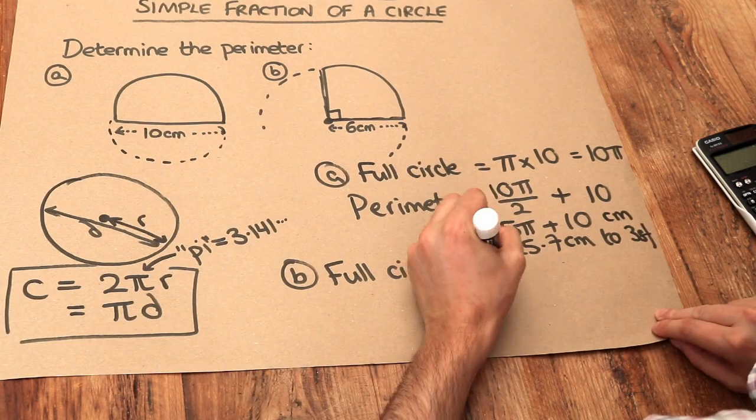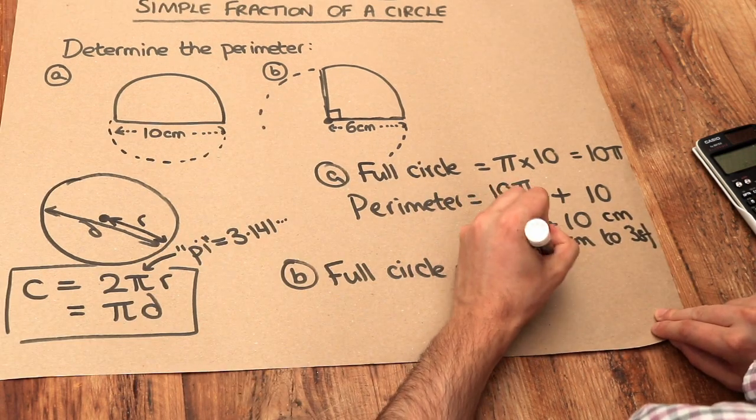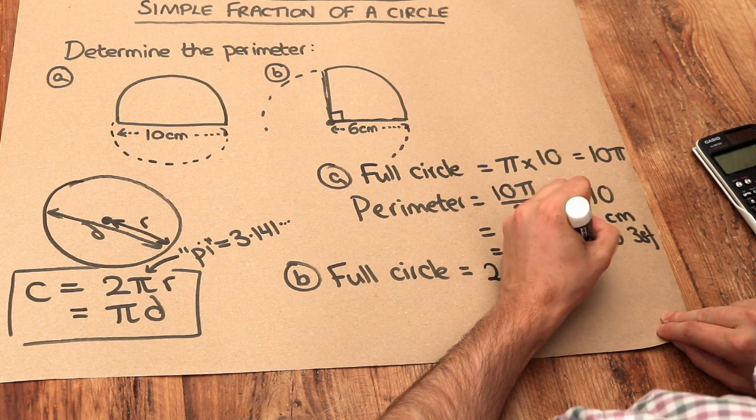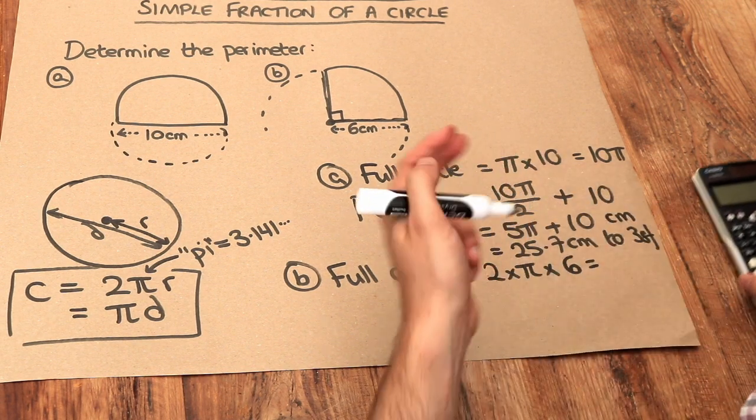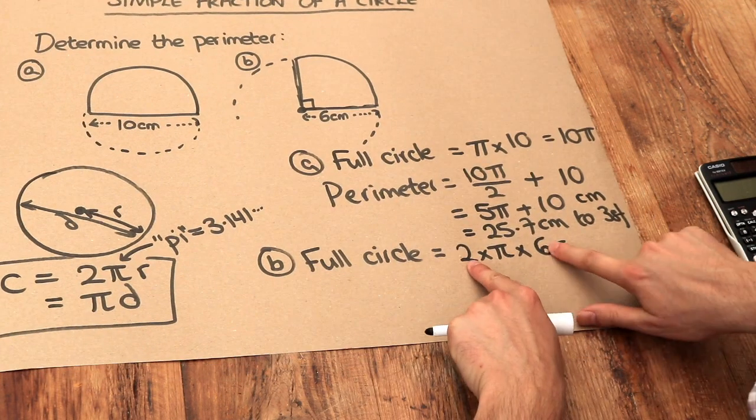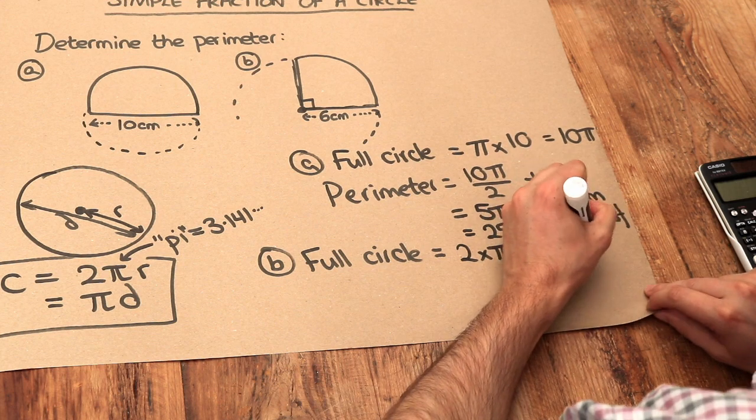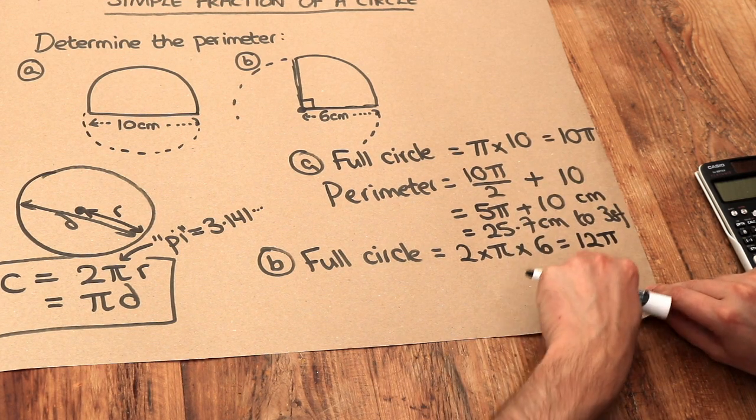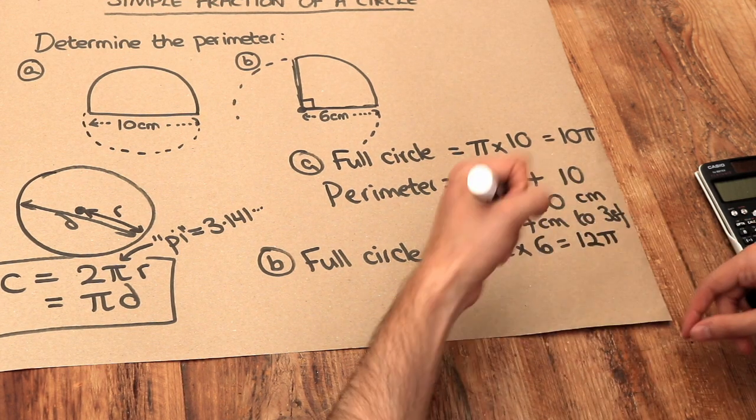So 2 times pi times r, 2 times pi times the radius of 6. Now you could put this on a calculator, it would simplify it for you. But, well, 2 times 6 is 12, so it's 12 pi. Remember when we put the number in front of the pi rather than saying pi 12.